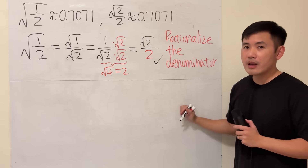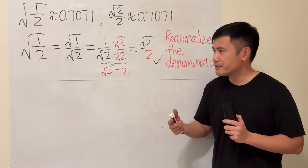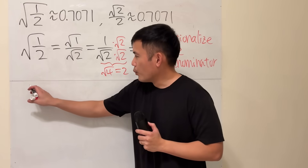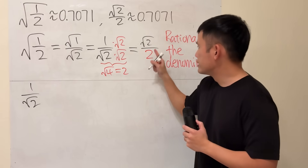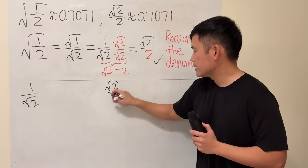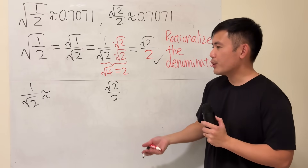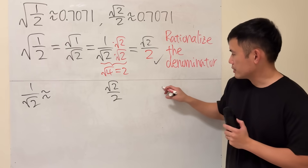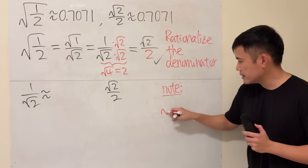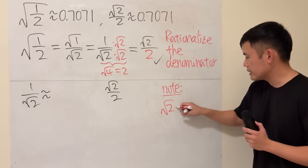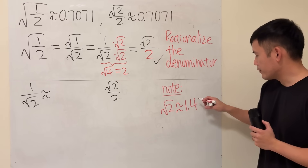But why do we do it? Imagine that you don't have a calculator and you are trying to compute this by hand: 1 over square root of 2 versus square root of 2 over 2. I'll have to tell you what square root of 2 is about. Square root of 2 is approximately 1.414.